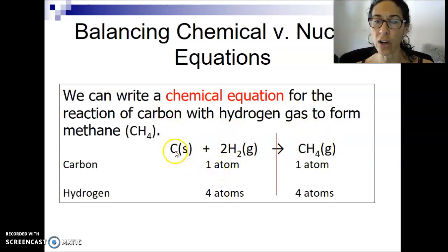What we see is on the left we have one carbon atom, and on the right we have one carbon atom. On the left we have four hydrogen atoms, two times two is four, and on the right we have four hydrogen atoms. So that balancing allows us to show effectively that no matter has been lost or gained.